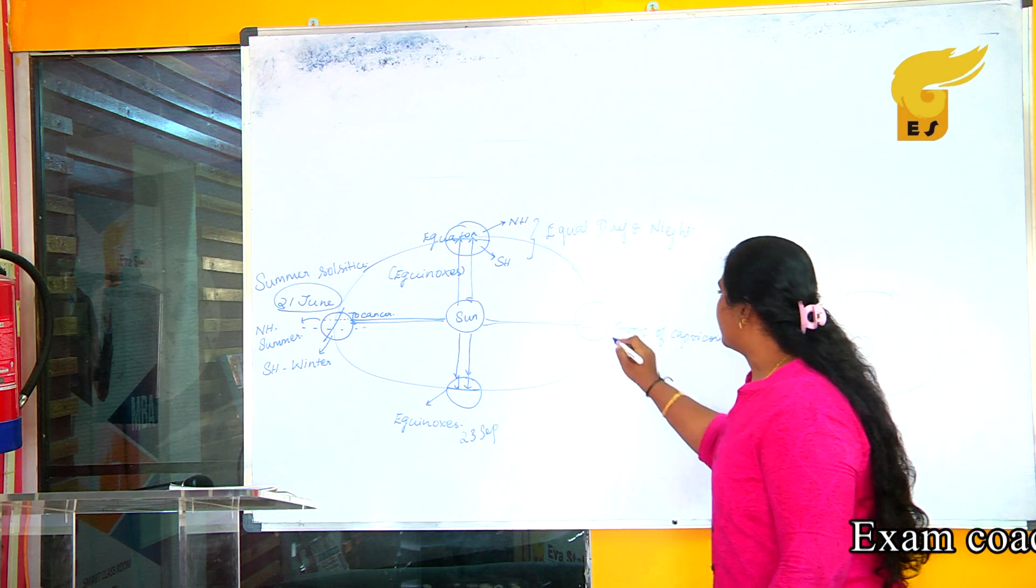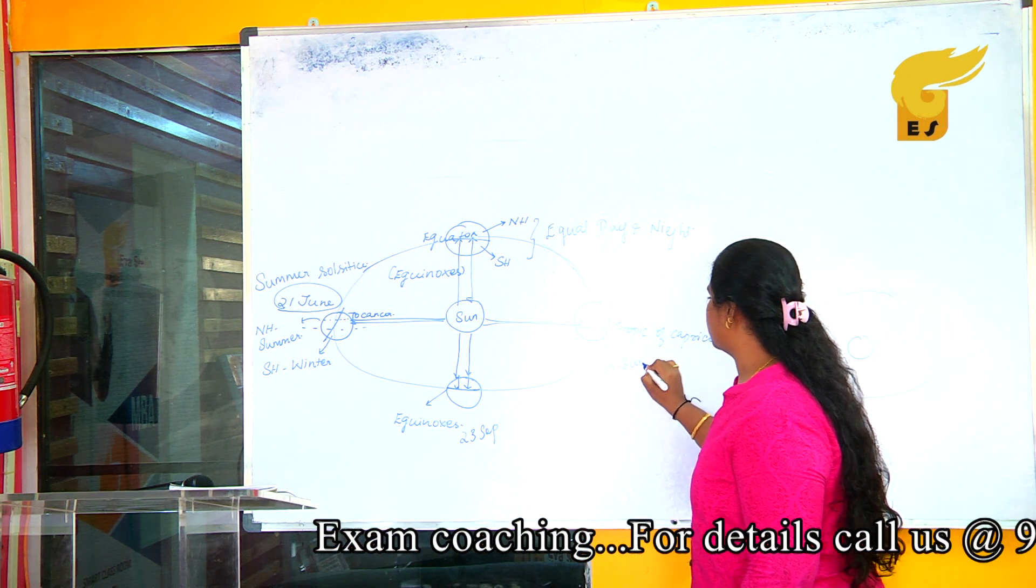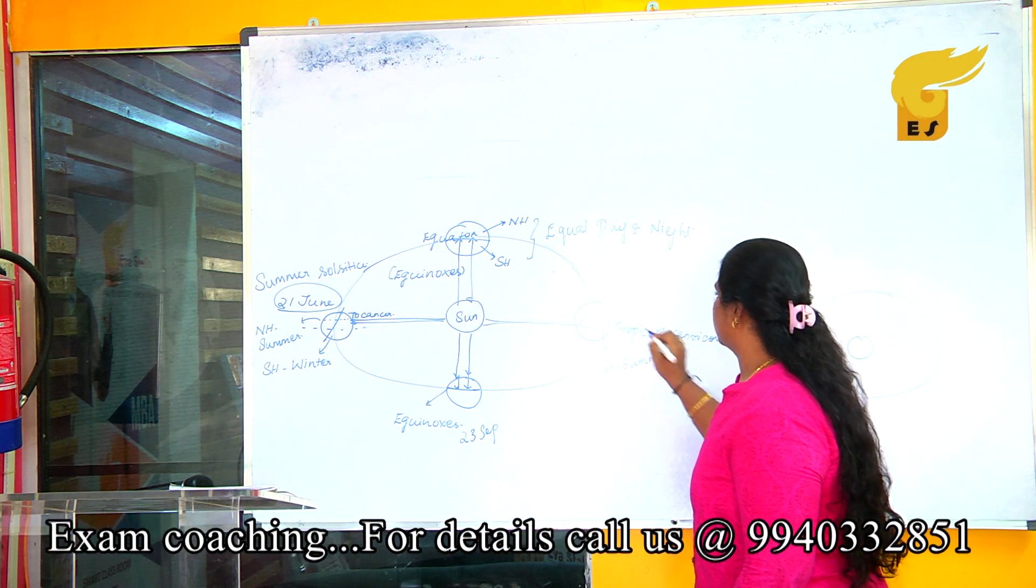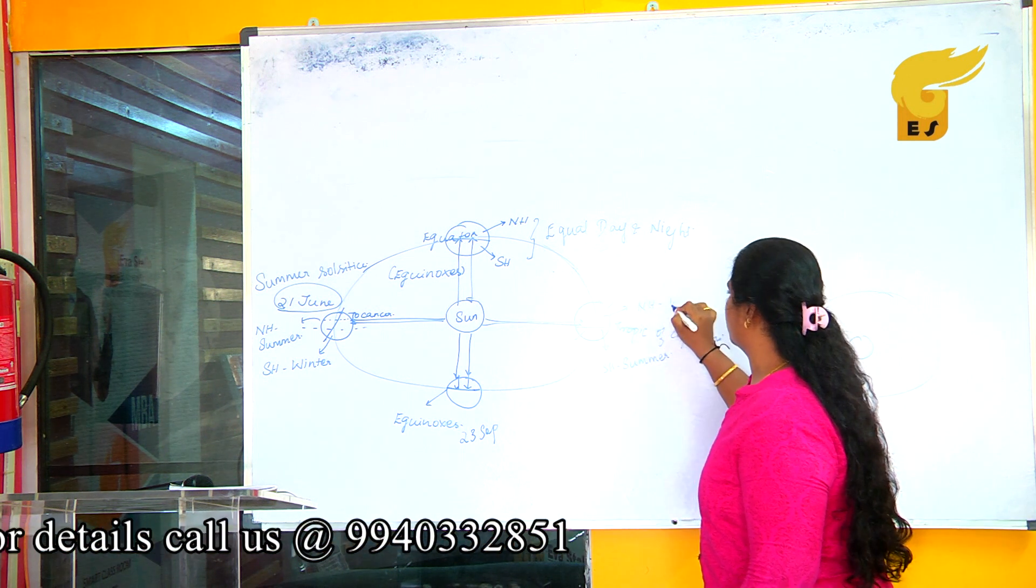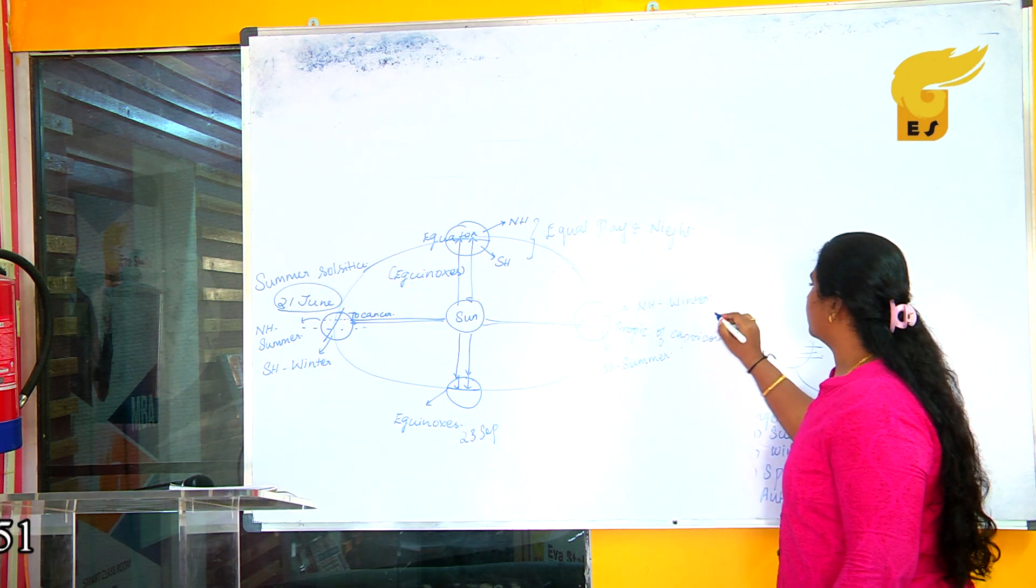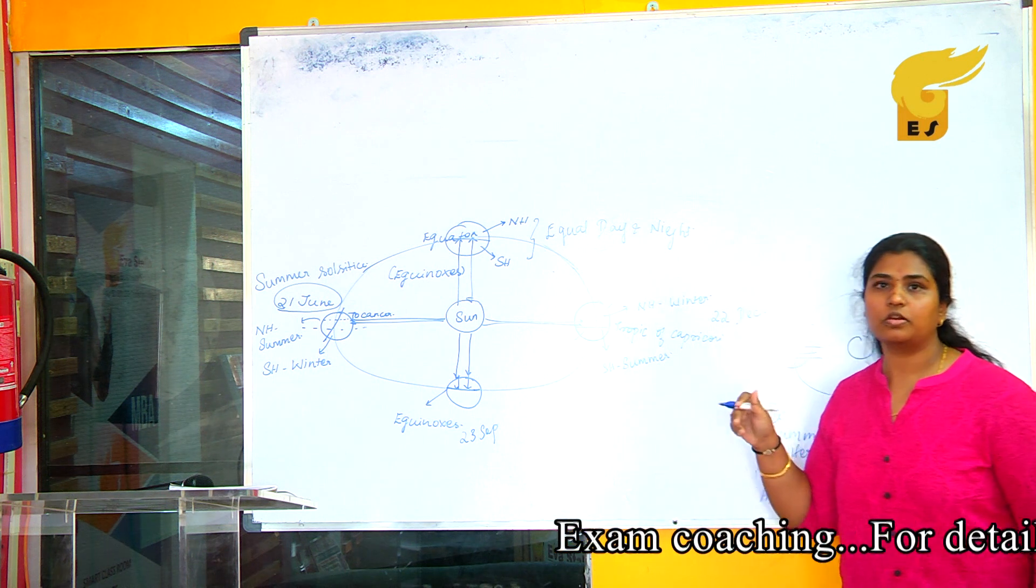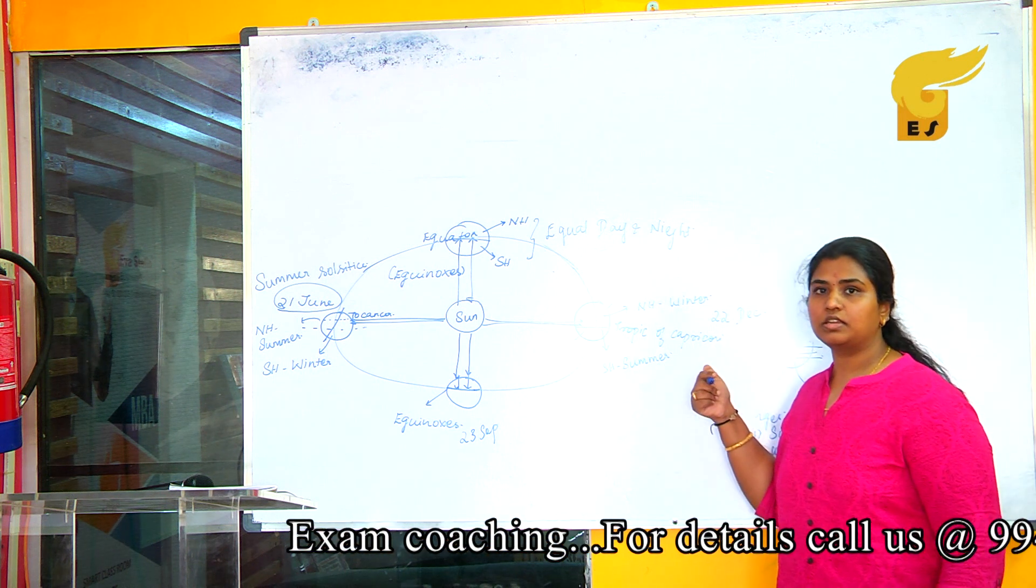This means that Southern Hemisphere will undergo Summer and Northern Hemisphere will undergo Winter Season. This will happen when the sunlight falls directly on Tropic of Capricorn on 22nd December.